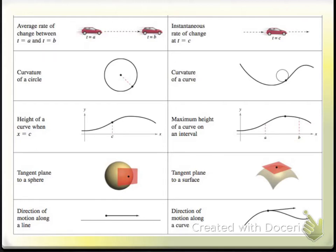The instantaneous rate of change is what your speedometer actually says when you're thinking about driving a car. With pre-calculus, you can find the curvature of a circle — a very specific object with a very defined shape. But with calculus, you can actually do that for any curve. It doesn't have to be a circle; it can be any kind of shape.